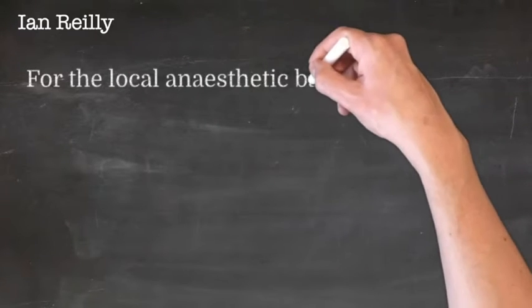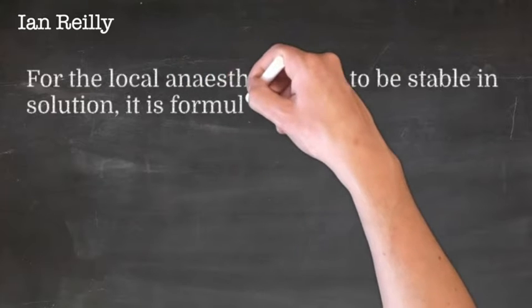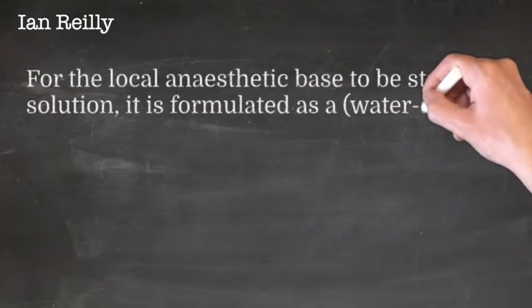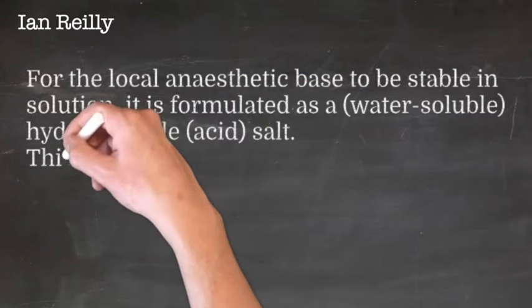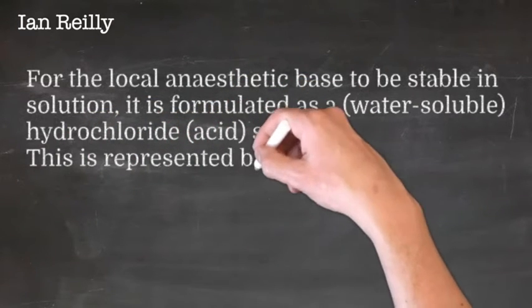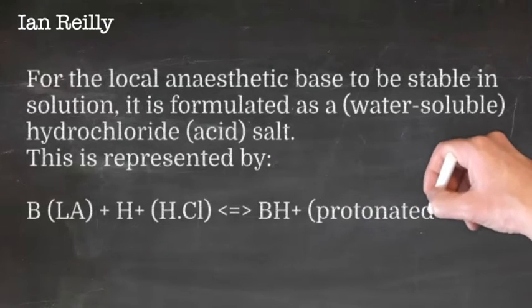We have our local anesthetic solution. For the local anesthetic base to be stable in solution, it's formulated as a water-soluble hydrochloride salt, and then we inject that into the tissues. The formation of the local anesthetic is represented by this equation.